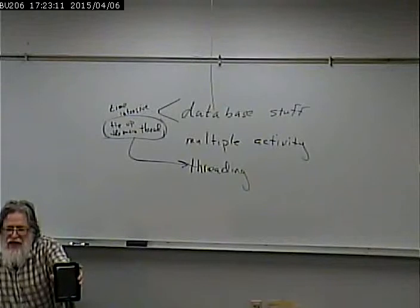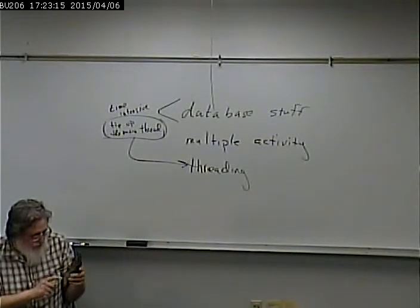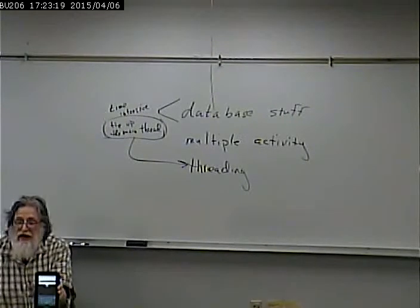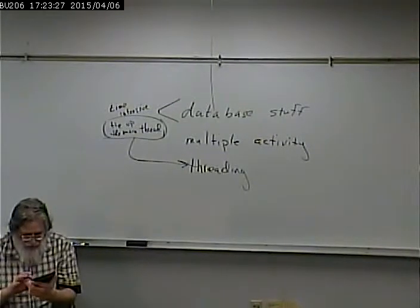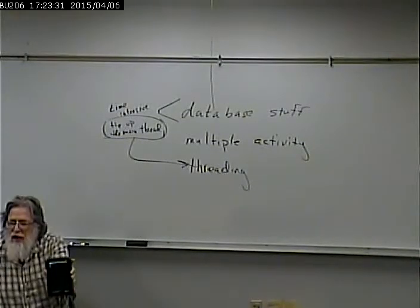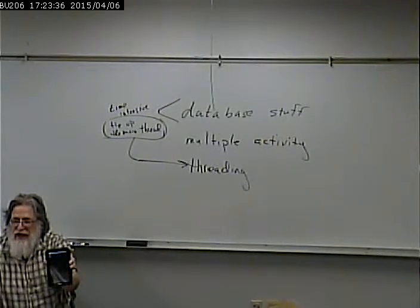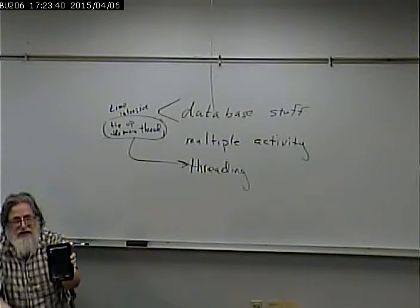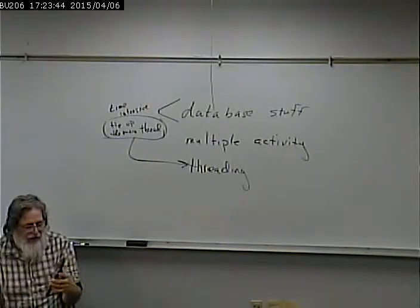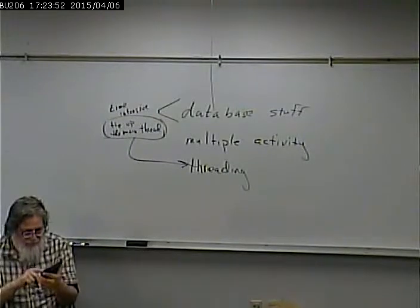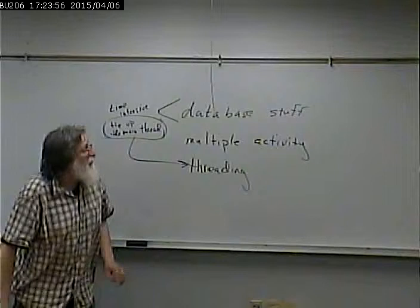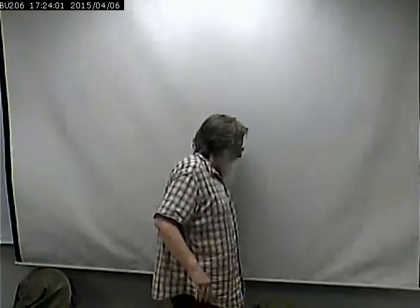Activity number one: we get a list of the contacts in our address book. Activity two: if we hit the menu, we can add a contact - that's a different screen. We're asking the user to do something else; we're not looking at a list of contacts, we can enter a contact. After hitting save, we're back to the other activity. Typically when you invoke an activity, when it finishes you go back to the activity that invoked it. Viewing a contact is its own activity, just as editing it or deleting it would be an activity.